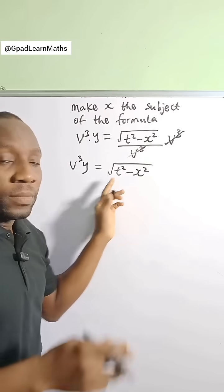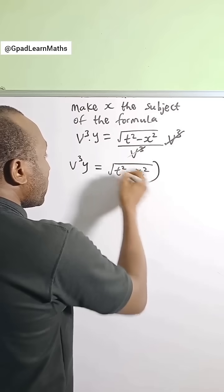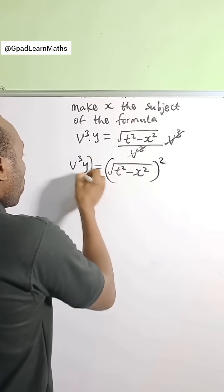There's something again we need to remove, which is the square root. So what we do - we square both sides to get rid of the square root. Square both sides.